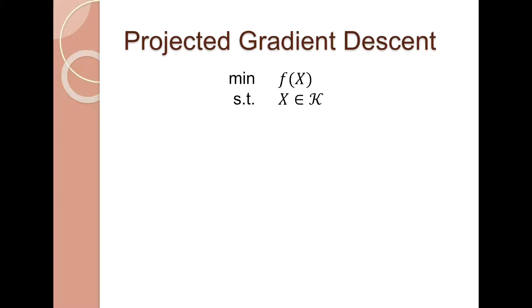We have a constrained convex optimization problem. One common way to solve it is projected gradient descent. It is an iterative algorithm. In each iteration, there is a gradient step and a projection step.